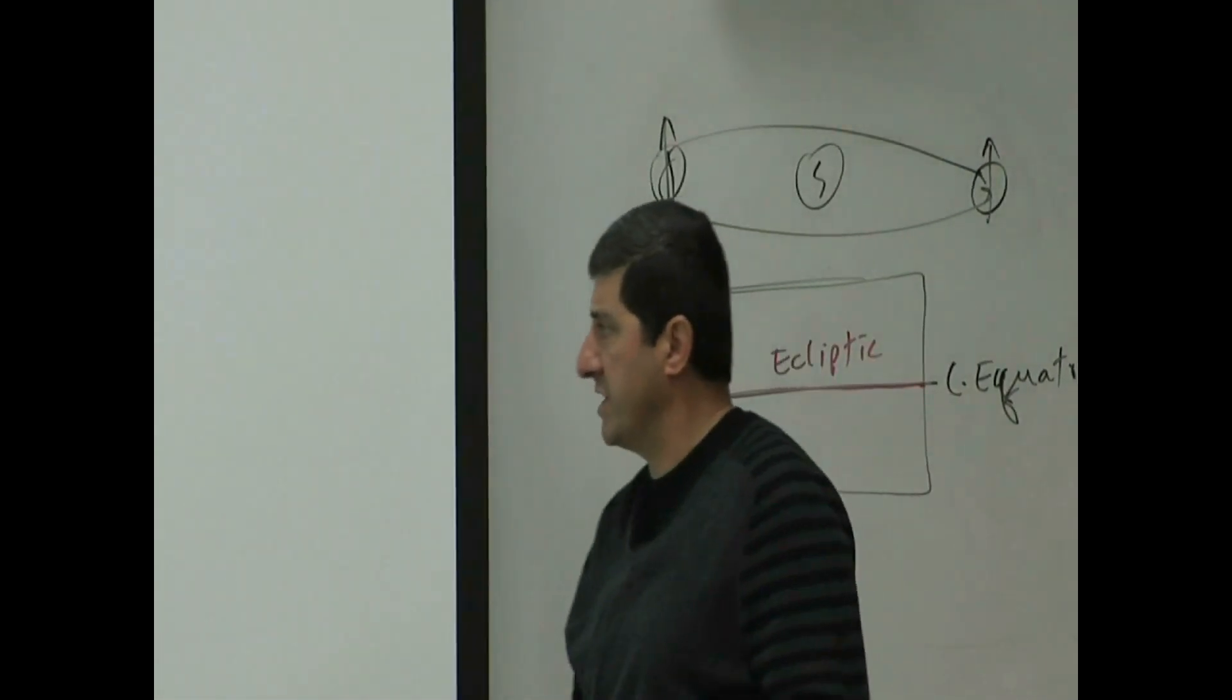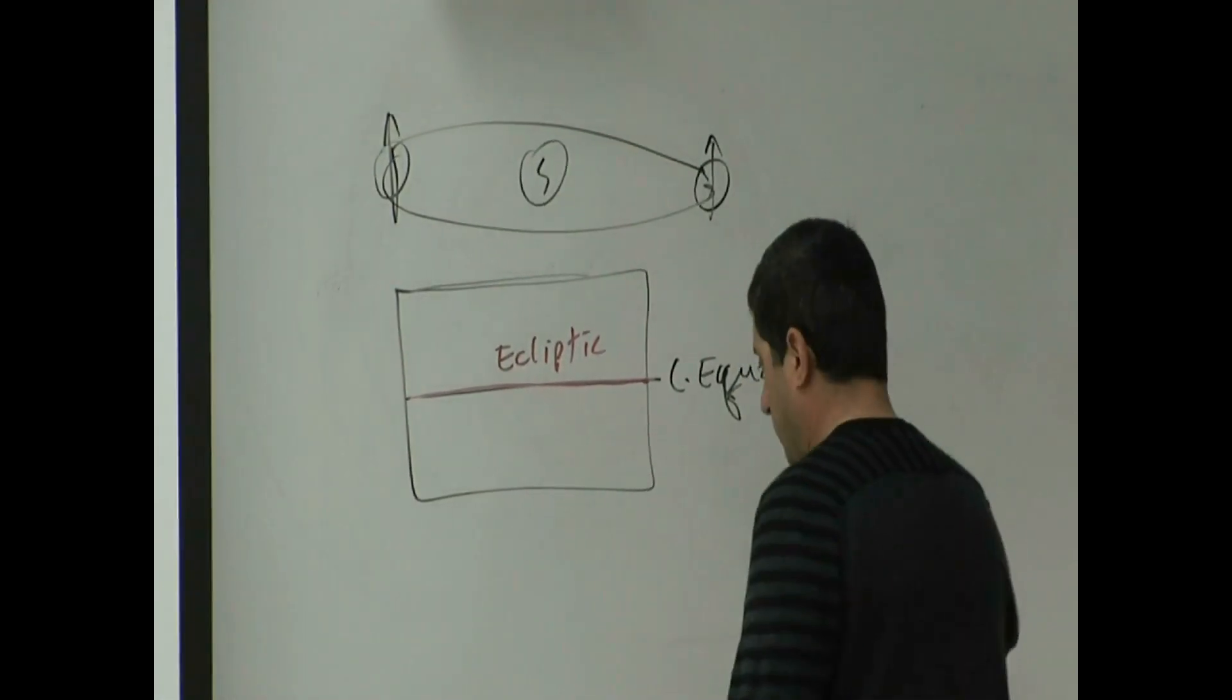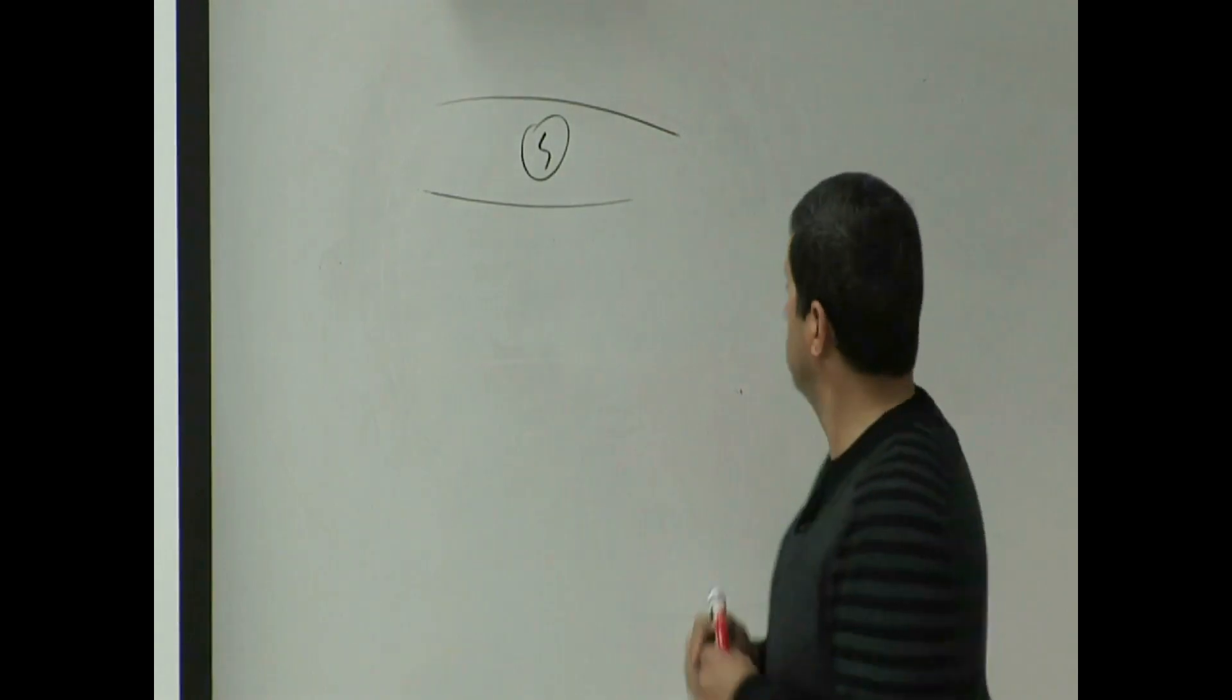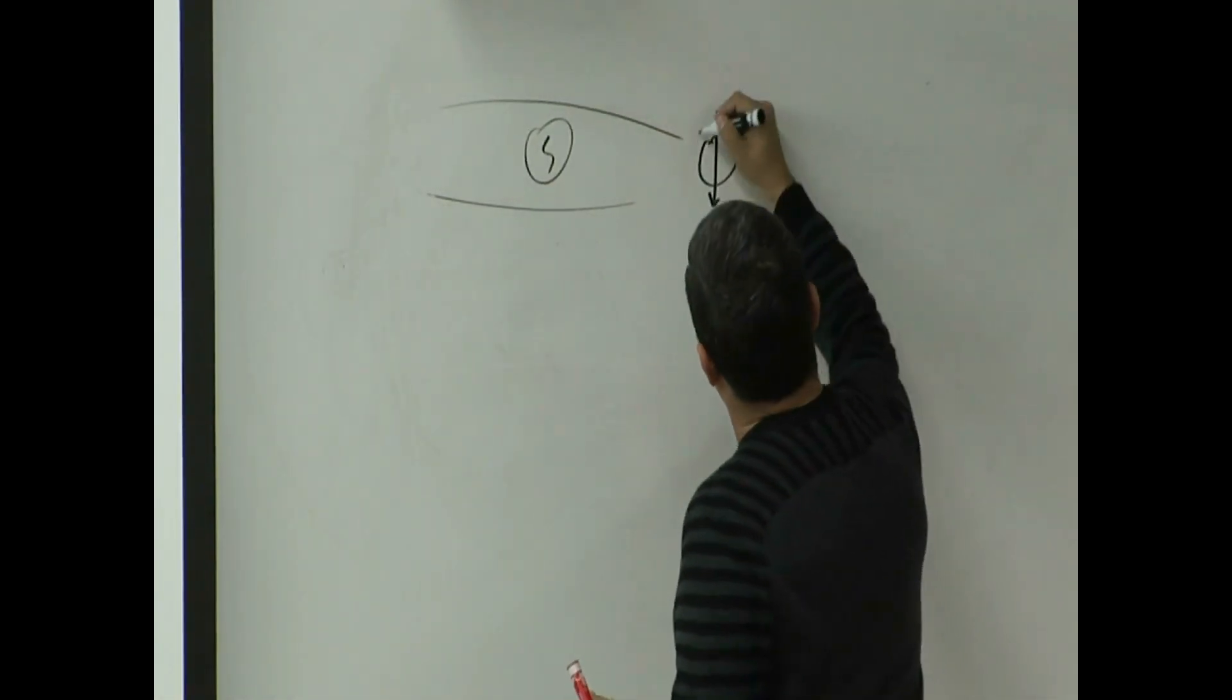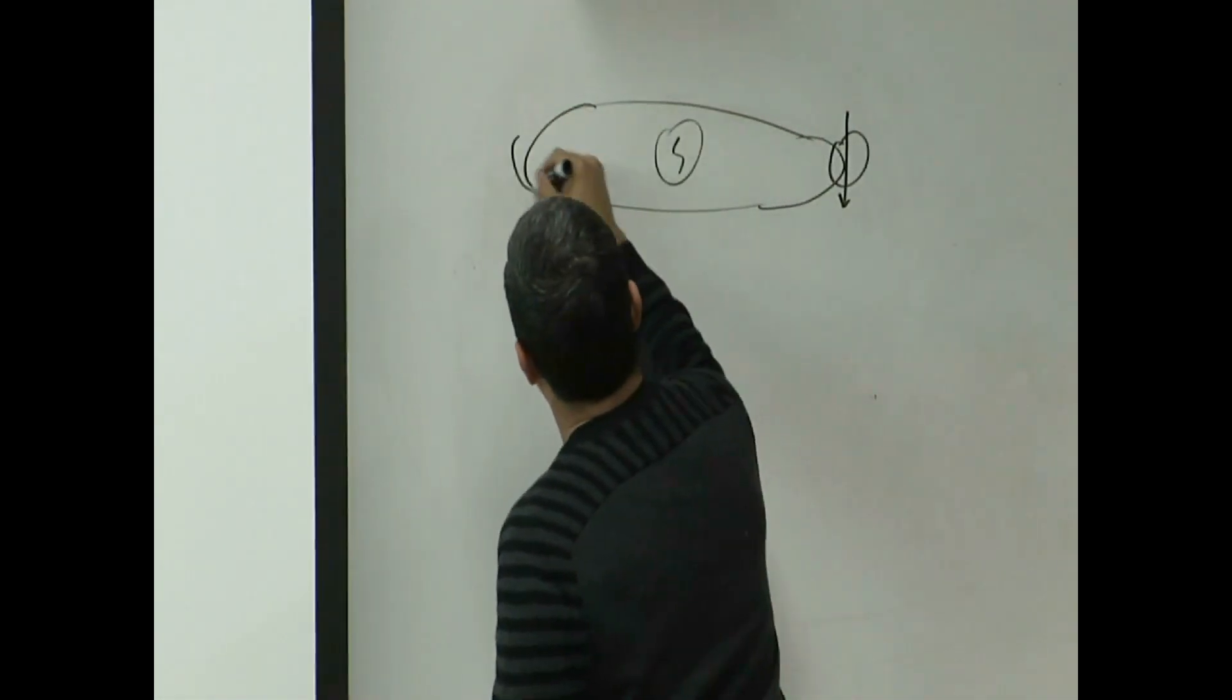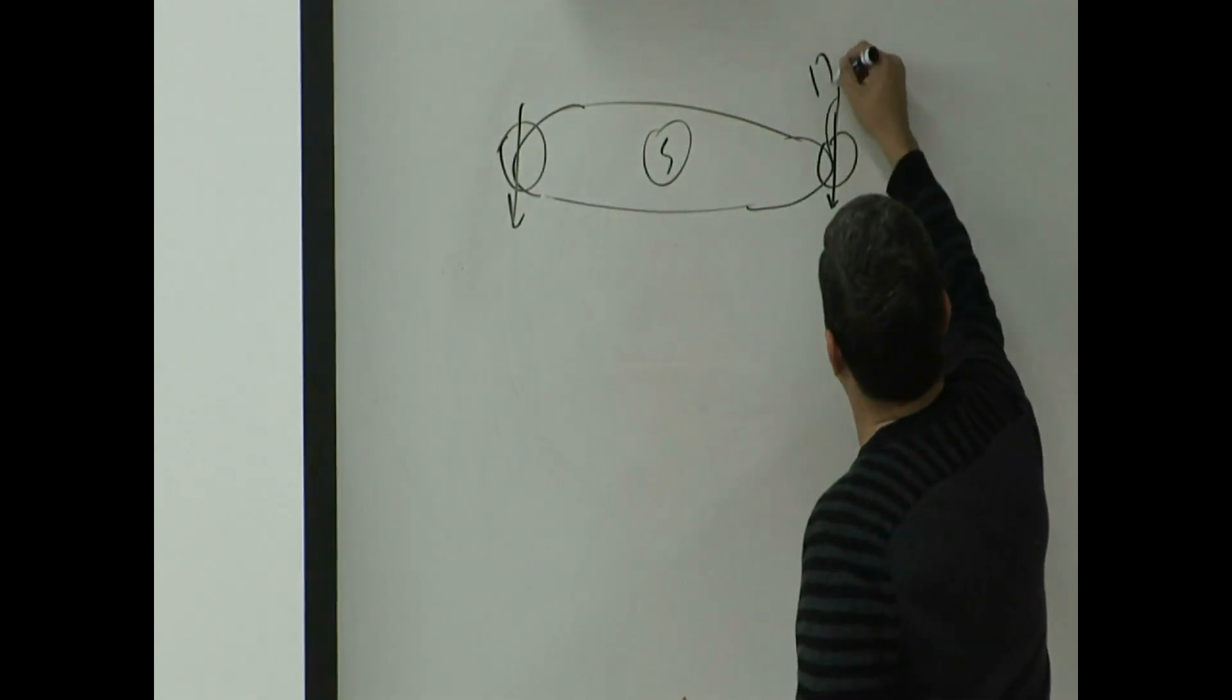Venus' tilt is 177 degrees. So what does that mean? It's going opposite. Venus looks like this, 177. It means almost 180, flipped upside down. So this angle is 177.